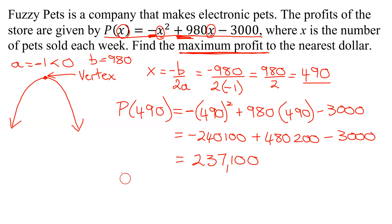So my maximum profit is 237,100. And it occurs when 490 pets are sold.